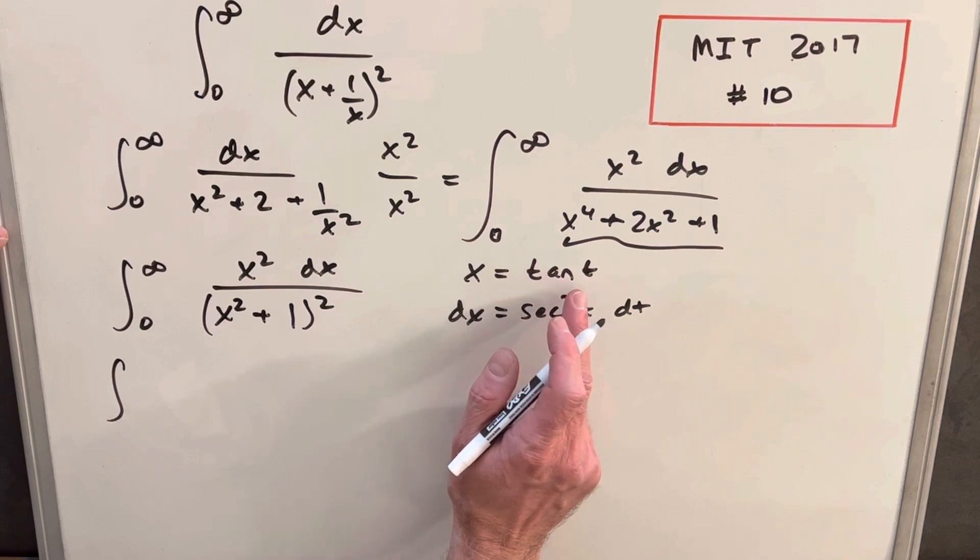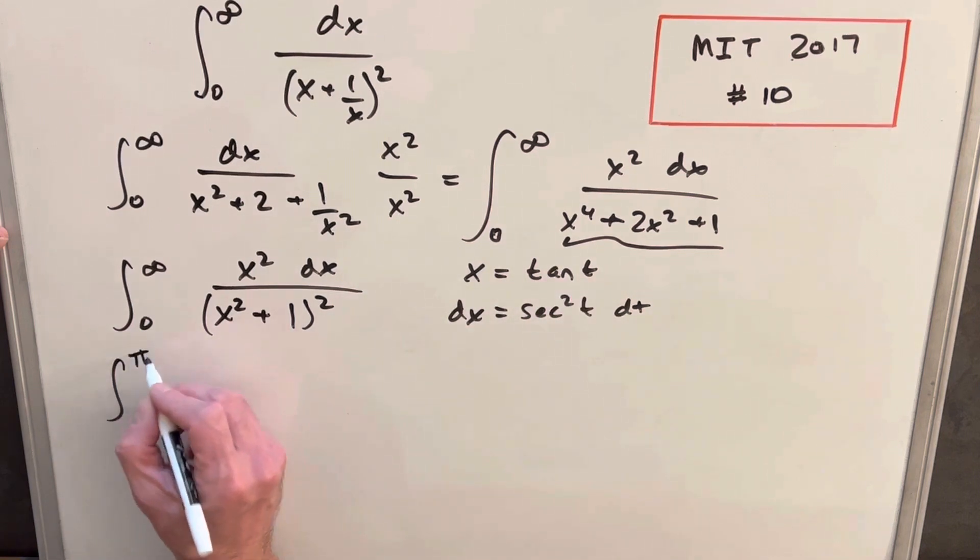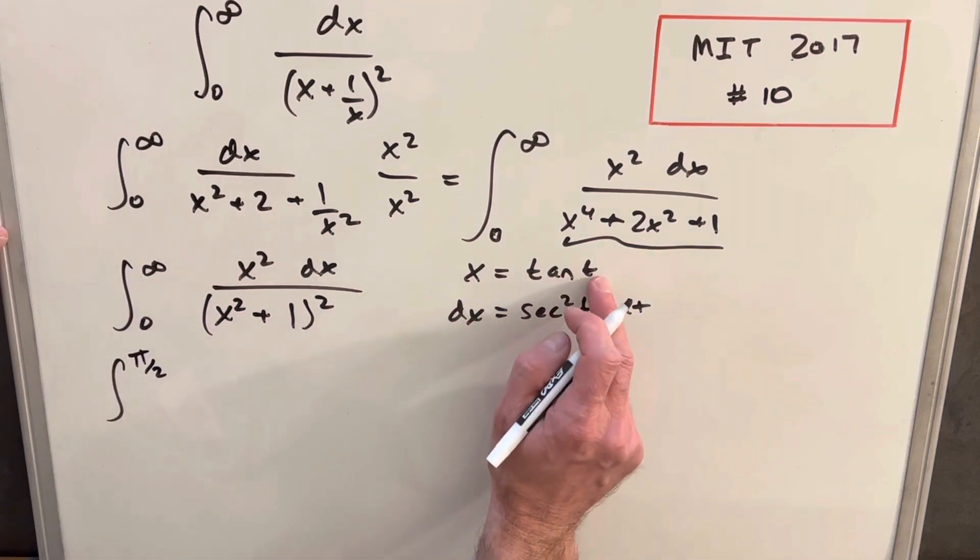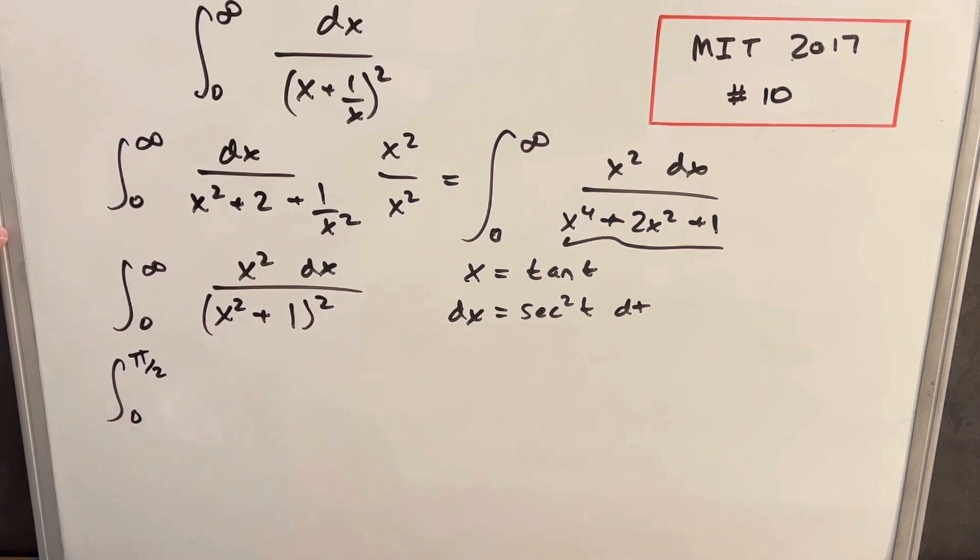At pi over 2, tangent is approaching infinity. And then for when is x 0, that would be when tan is 0. So we'll update the bounds like that.